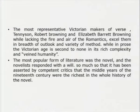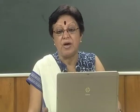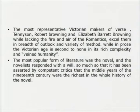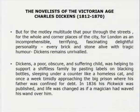The most representative Victorian makers of verse — Tennyson, Robert Browning, and Elizabeth Barrett Browning — lacking the fire and air of the Romantics, had in their own way excelled in breadth of outlook and variety of method. We have seen how they experimented with form. While in prose, the Victorian age is second to none for its rich complexity and humanity. As we said earlier, the most popular form of literature was the novel, and the Victorian age is known as the age of the novel. The novelist who dominates the entire Victorian age and especially the area of the novel is Charles Dickens, 1812 to 1870.